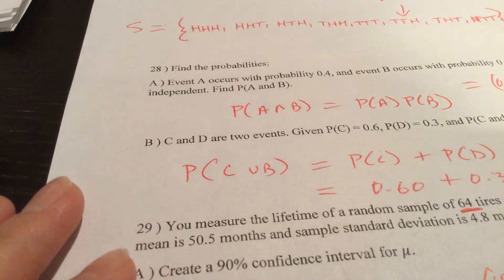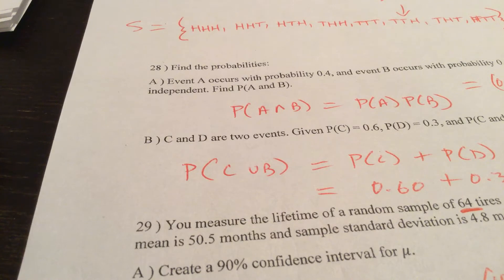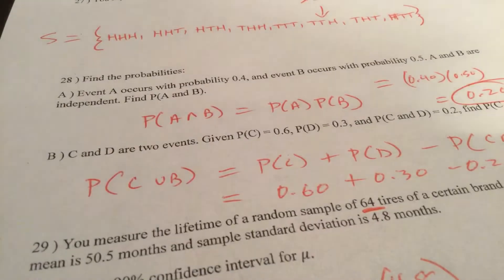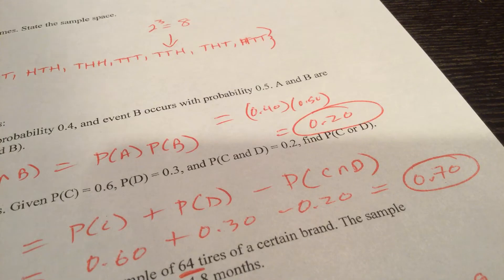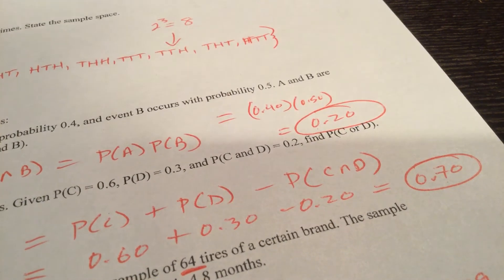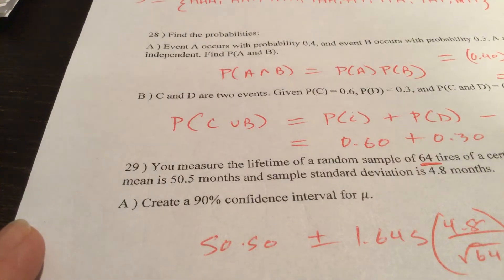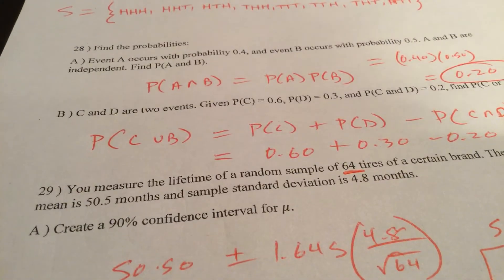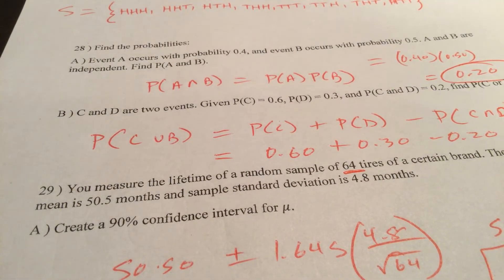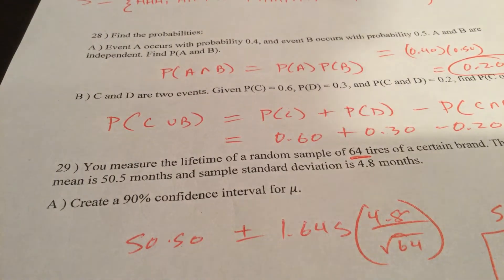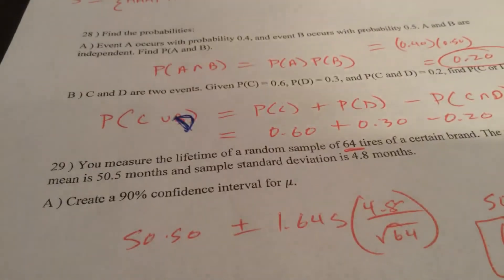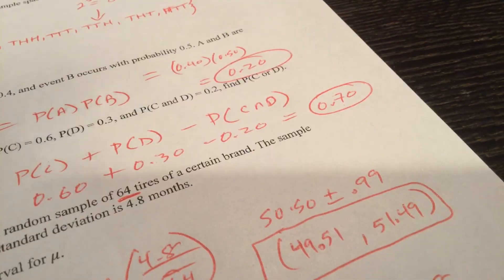Find the probabilities. A occurs with probability 0.4. B occurs with probability 0.5. A and B are independent. So the probability of A and B, that's the probability of A intersection B. We know that the probability of A intersection B is the probability of A times probability of B. You should know that one. C and D are two events. It doesn't say that they're independent, but we know the probability of C or D. Probability of any A union B is A plus B minus their intersection. So the probability of C or D is probability of C plus probability of D minus their intersection. 0.70.